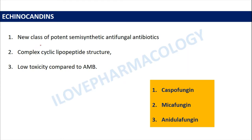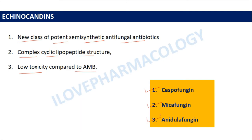Echinocandins are a new class of potent semi-synthetic antifungal antibiotics. They are made up of a complex cyclic lipopeptide structure and have low toxicity compared with amphotericin B. The echinocandins are caspofungin, micafungin, and anidulafungin.